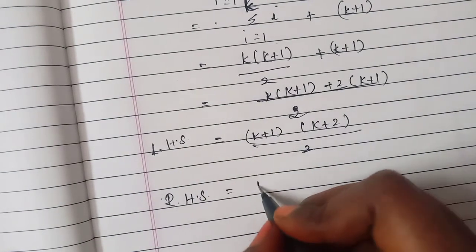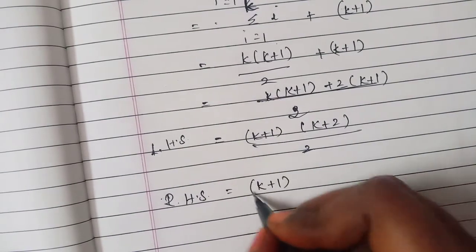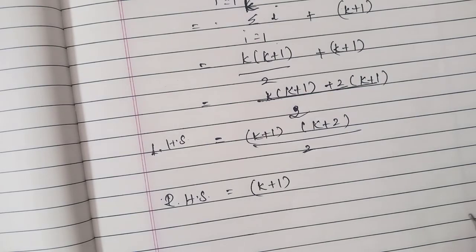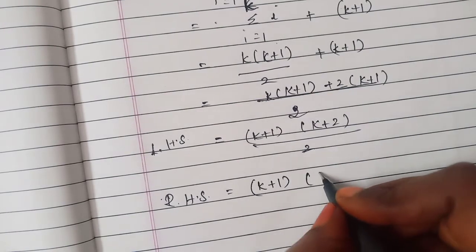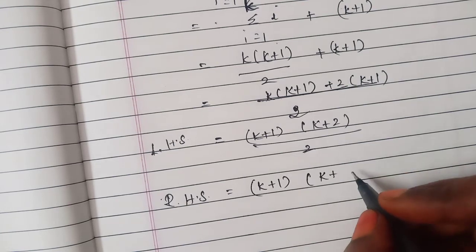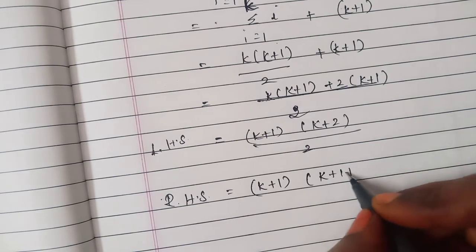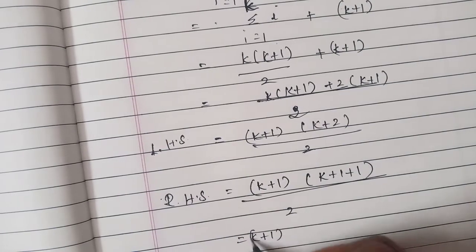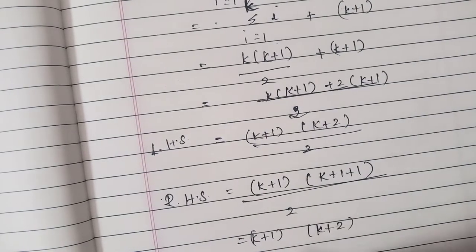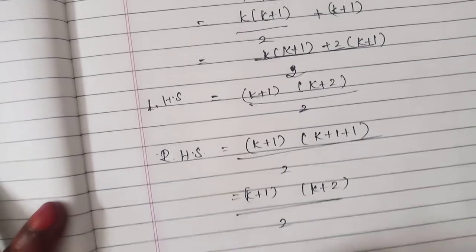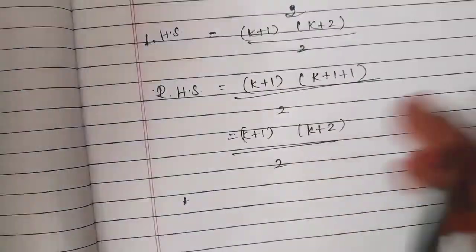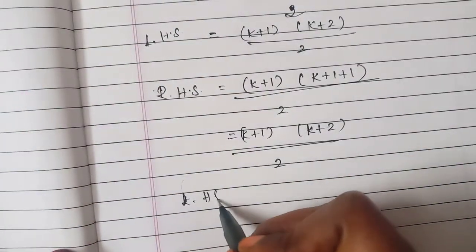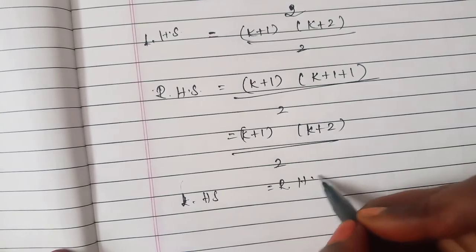Now we'll see the RHS. So k plus 1 in the right hand side we'll substitute like this k plus 1 plus 1 divided by 2 which is equal to k plus 1 into k plus 2 divided by 2 so here LHS equal to RHS.